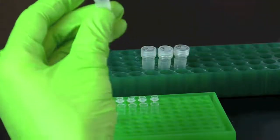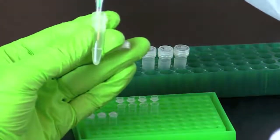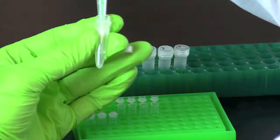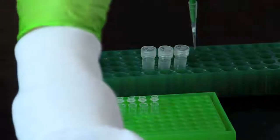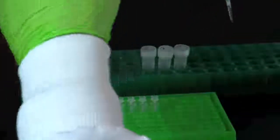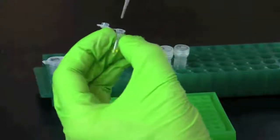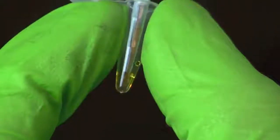Pipet 20 microliters of DNA template into the correspondingly labeled PCR tube. Avoid disturbing or transferring the pellet of instagene matrix, which is at the bottom of the student's samples. Pipet up and down to thoroughly mix the DNA template and the master mix.